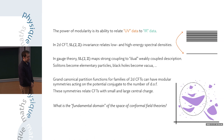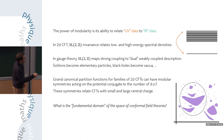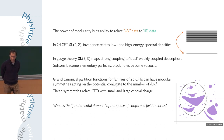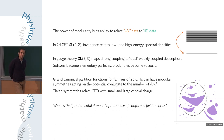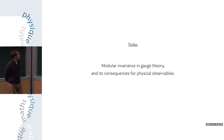A slightly more adventurous form of modularity: in two-dimensional CFTs you can form grand canonical partition functions where you sum over partition functions of different theories in a given sequence. These symmetries relate CFTs with small and large central charges, and one can ask the somewhat fanciful question: what is the fundamental domain of the space of conformal field theories? Today I'll do something more modest — discuss SL(2,Z) invariance in gauge theory and the consequences of that symmetry for the physical observables.